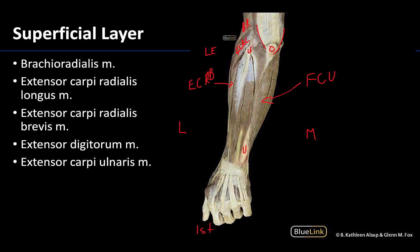The extensor digitorum is located more intermediate in this region. As we get down into this layer it starts to split into tendons — four long tendons going to digits two through five, similar to what we had in the flexor compartment with those digitorum muscles. This is the posterior counterpart to those anterior muscles, and they will extend the digits.